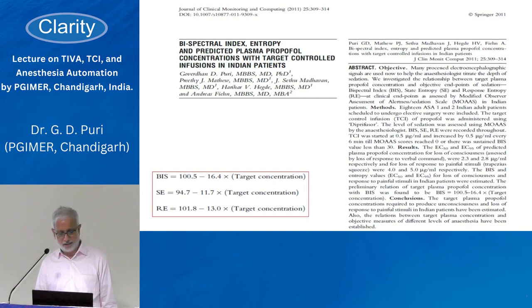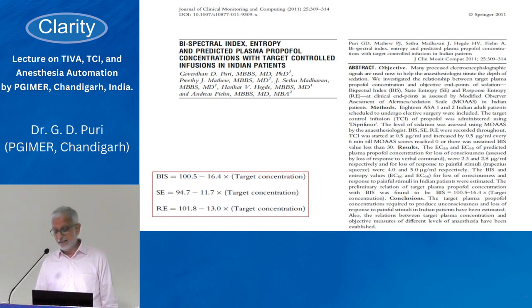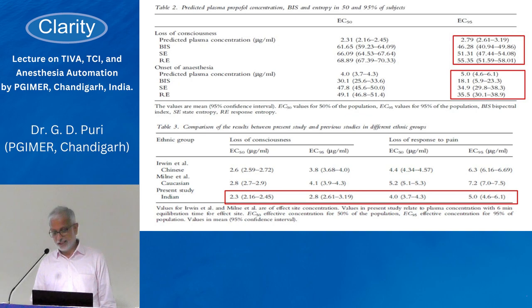Back in 2008–09, we studied the relationship between different propofol concentrations and BIS and entropy values. We stepwise increased the concentration, observed the assessment scale, BIS, and entropy, and plotted the results. The predicted plasma concentration for loss of consciousness was 2.8 micrograms/ml — with propofol alone, not propofol plus fentanyl — and BIS was around 46 at that point. For loss of painful response, the concentration was 5 micrograms/ml, with BIS expected around 20.